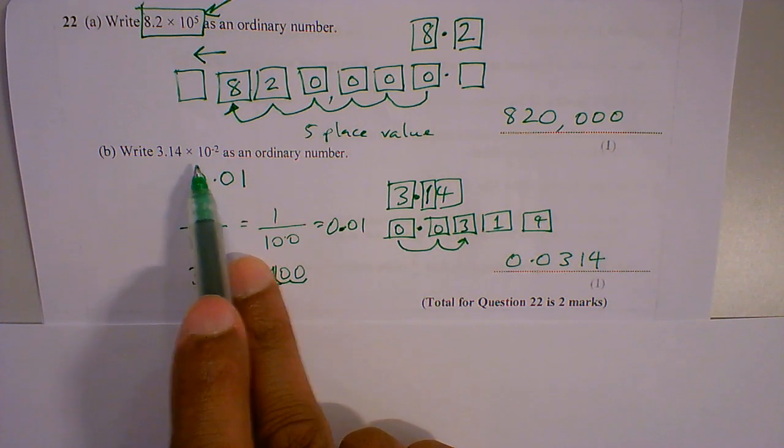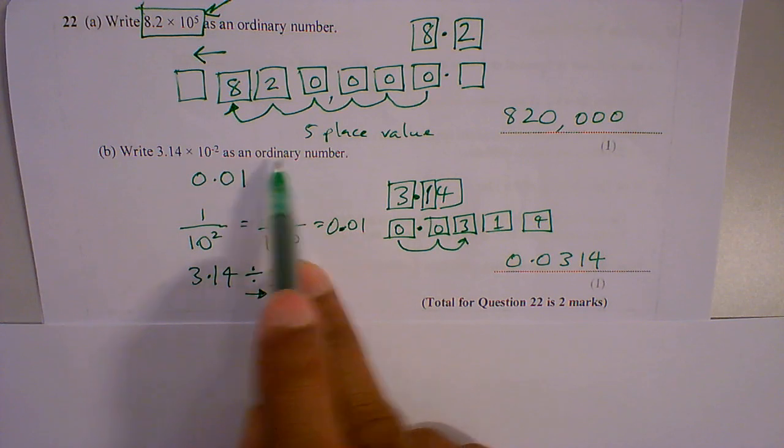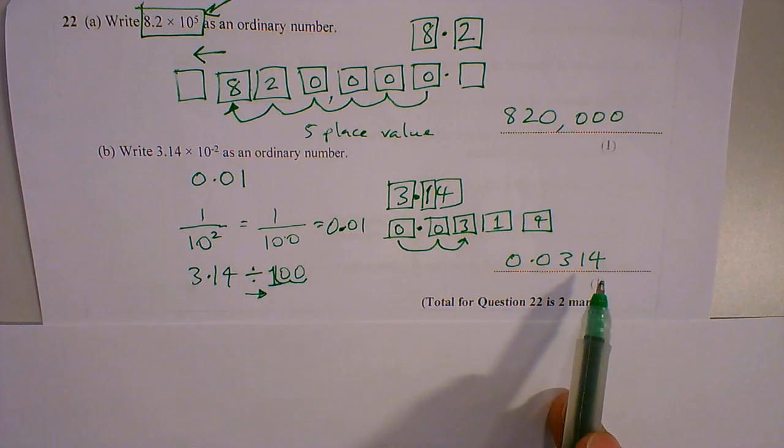Write 3.14 times 10 to the power minus 2 as an ordinary number. And that is now an ordinary number.